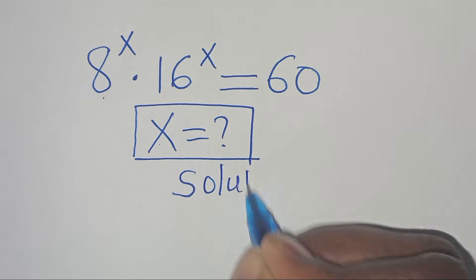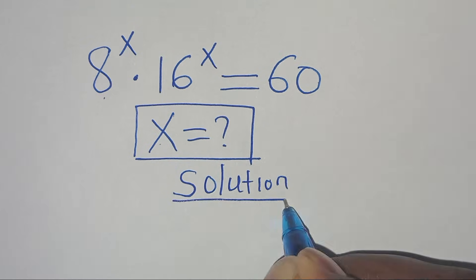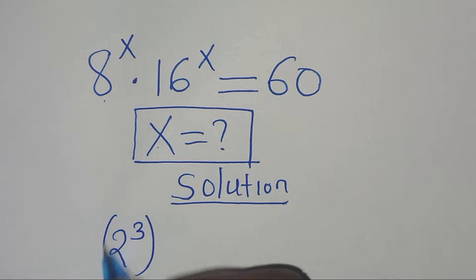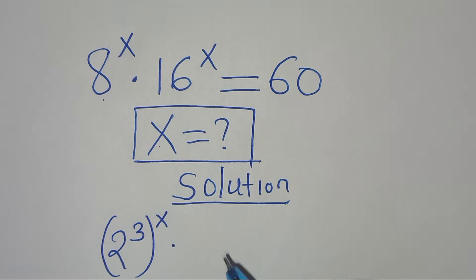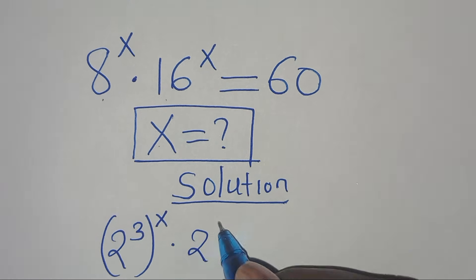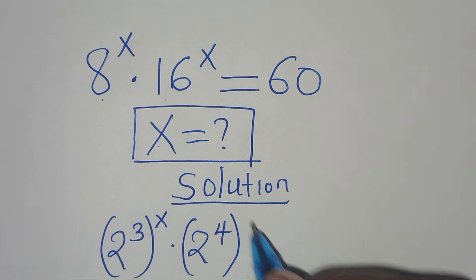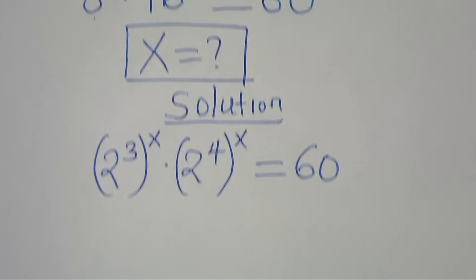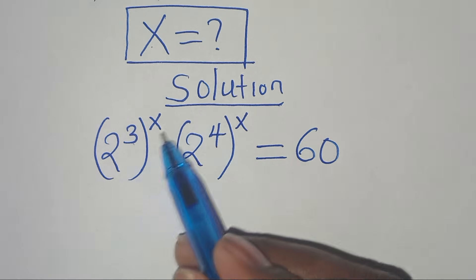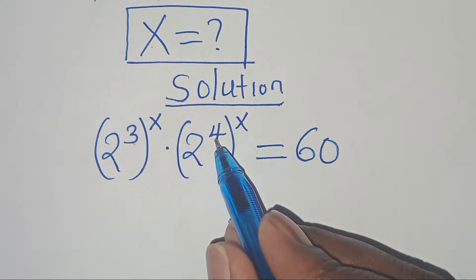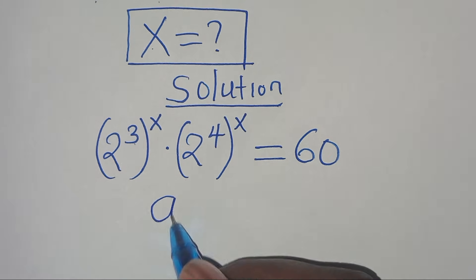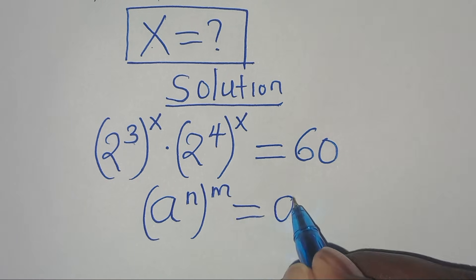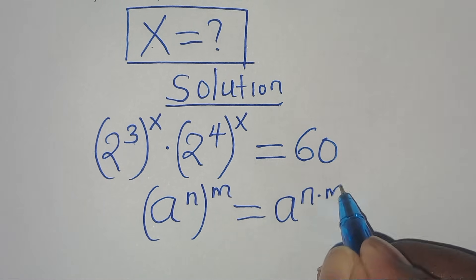From here we can express 8 as 2 to the power of 3, raised to the power of x, times 16 which is 2 to the power of 4, raised to the power of x, and this is equal to 60. Now 2 to the power of 3 raised to the power of x is in the form of a to the power of n raised to the power of m, which we can express as a to the power of n multiplied by m.